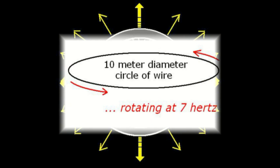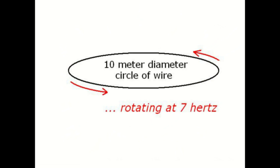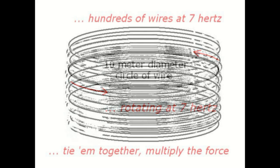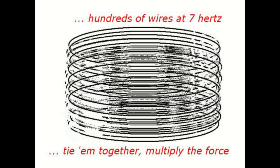Better yet, let's make a ring and let it hold itself together like a rotating circle of wire. If we can rotate a 10 meter in diameter circle of wire, we can rotate hundreds of circles of wire and bundle them together to get a heavier ring to increase the force available to propel the craft.